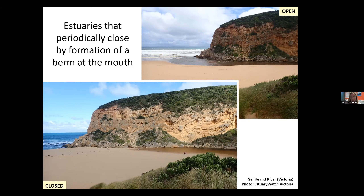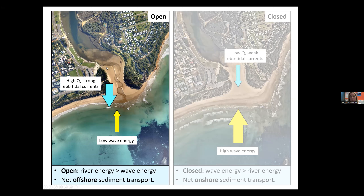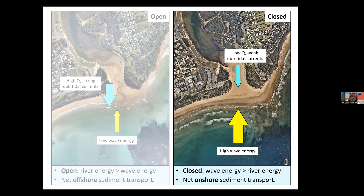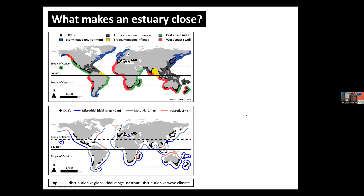Just a bit of background to entrance processes. When these estuaries are open — like you can see here with Anglesey Estuary in Victoria — it's all about this balance between competing energies from the catchment and marine side. When they open, we tend to have periods of high river flow punch through the berm, and then ebb tidal currents are able to beat out sediment brought onshore by waves, so our net direction of sediment transport is offshore. On the flip side, when we see these systems close, it's when we have high wave energy that can beat out erosional currents in the entrance and drive sediment onshore.